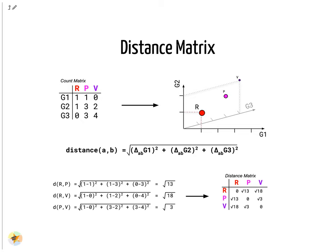Here we use the Euclidean distance on a three-dimensional dataset of three genes G1, G2 and G3, and three cells R, P and V. The distance between any two cells can be calculated as the sum of squares of the difference in gene values. Note how the distance matrix is symmetrical along the diagonal, confirming that for example the distance from cell R to V is the same as the distance from V to R as expected.